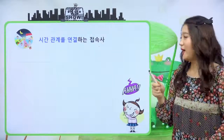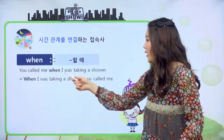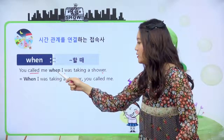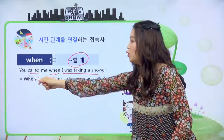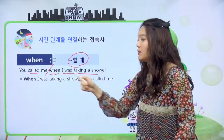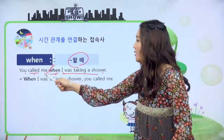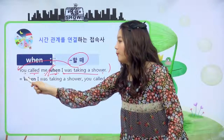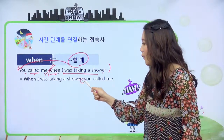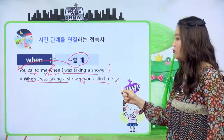시간 관계를 연결하는 접속사입니다. 첫 번째 when, 뭐뭐 할 때라고 해석이 돼요. 예를 들면 You called me when I was taking a shower. 너는 나에게 전화했었어. 내가 샤워를 하고 있었을 때. 이 접속사 앞을 끊어서 해석하면 편할 거예요. 그리고 순서를 바꿔도 돼요. When I was taking a shower, you called me 이렇게 앞으로 보내면 되고, 이 경우 사이에 콤마가 와야 돼요.